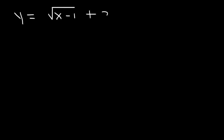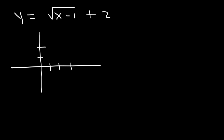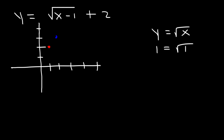Graph the function — the square root of x minus 1 plus 2 — and determine the domain and range. This graph shifts one unit to the right and up two units, so the new origin is at 1 comma 2. The square root of 1 is 1, so traveling one unit right brings us to 2 comma 3. The square root of 4 is 2, so traveling four units right gives us the point 5 comma 4.